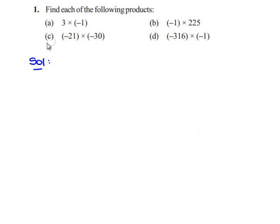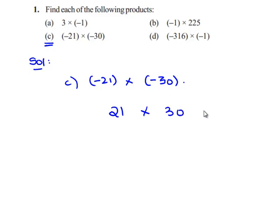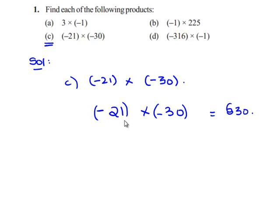We'll see the third part: negative 21 into negative 30. Regardless of their signs, we take the product of the values. That is 21 into 30, which equals 630. The sign of 21 is negative and the sign of 30 is negative. When there are two similar signs, the product always gives a positive sign. Therefore, negative 21 into negative 30 gives positive 630.